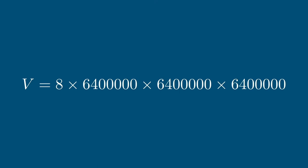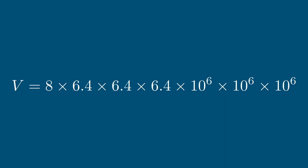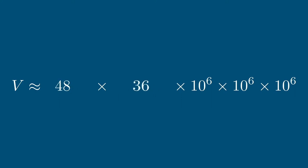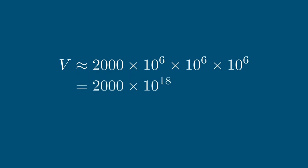Let's see how this plays out in our volume formula. We replace our radius with 6.4 times 10 to the power of 6, rearrange a bit, and guesstimate: 6.4 is approximately 6. Eight sixes are 48, six sixes are 36. In guesstimation, 48 is basically 50 and 36 is basically 40, making the maths easier — so we end up with 2,000 times 10 to the power of 6, times 10 to the power of 6, times 10 to the power of 6. How many tens do we have? Six from the first, six from the second, six from the third — multiplying by 10 a total of 18 times.